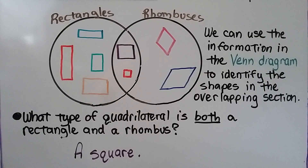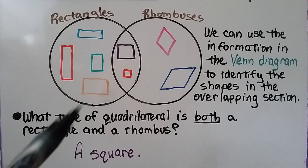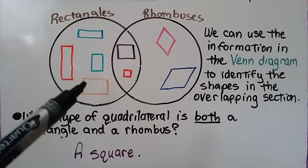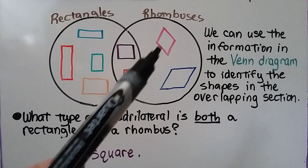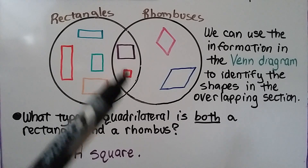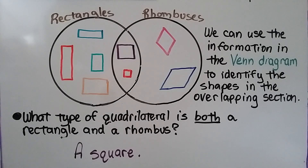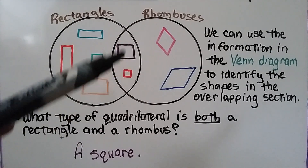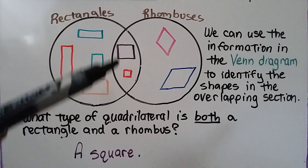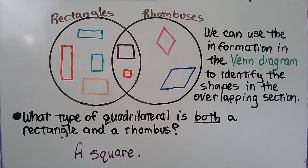We can use the information in this Venn Diagram to identify the shapes in the overlapping section. We can see these are all rectangles, and these are rhombuses. So what type of quadrilateral is both a rectangle and a rhombus? It's the shapes in the overlapping section — it would be a square.